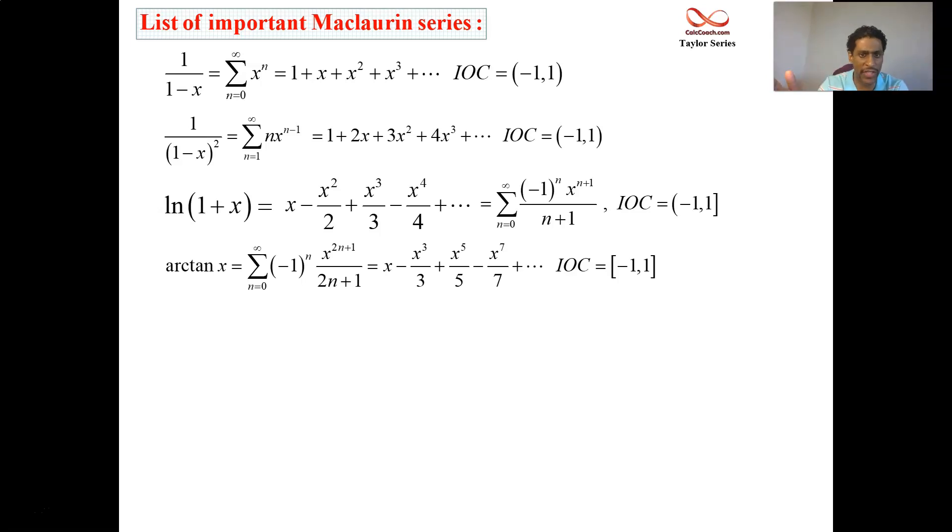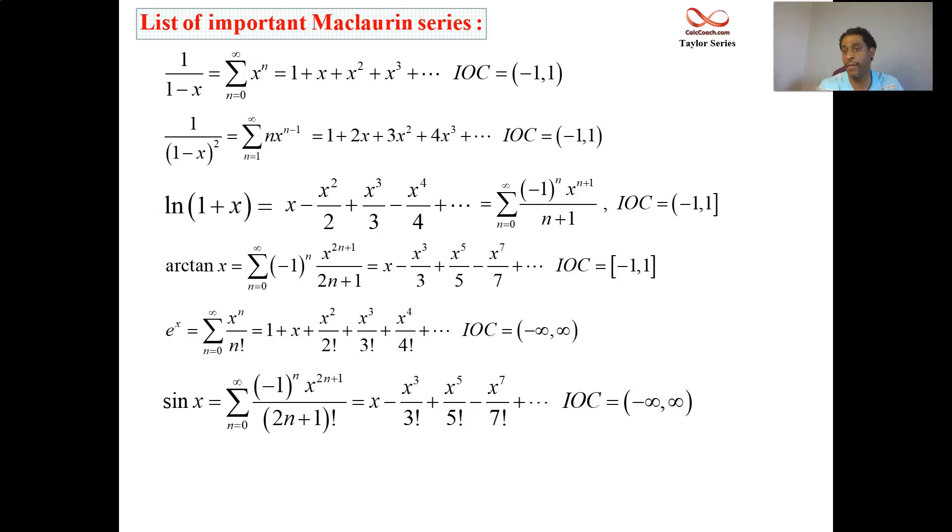We have the interval of convergence. That's what IOC stands for afterwards. And so this was in a previous lecture. And now in this lecture series here, we're looking at these more common functions. We have e to the x, we have sine x, and now we have cosine x. These guys happen to be all convergent for all x. The interval of convergence is the entire real line. And so this is our library of functions that we can find the representation for.